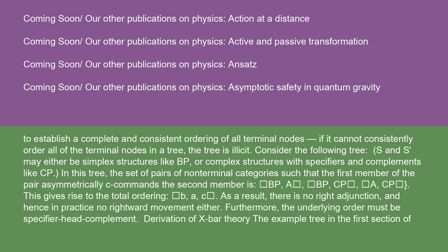If it cannot consistently order all of the terminal nodes in a tree, the tree is illicit. In this tree, the set of pairs of non-terminal categories such that the first member of the pair asymmetrically C-commands the second member is {BP, A}, {BP, CP}, {A, CP}. This gives rise to the total ordering B, A, C. As a result, there is no right adjunction and hence in practice no rightward movement either. Furthermore, the underlying order must be specifier-head-complement.